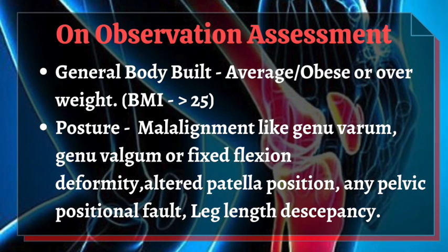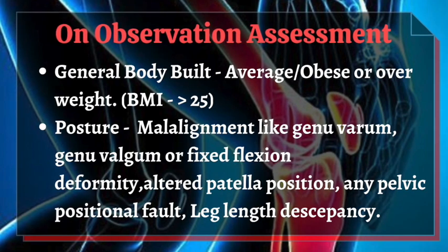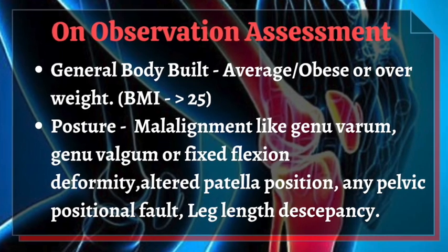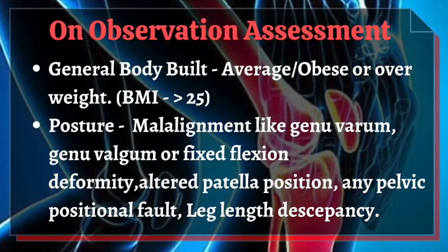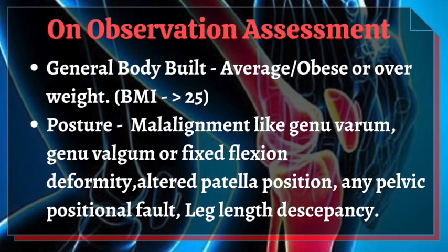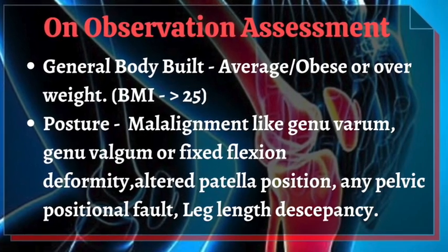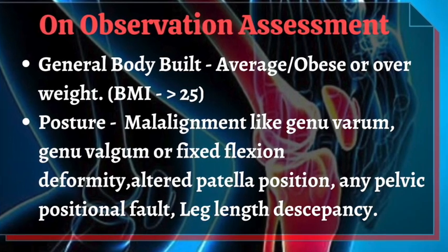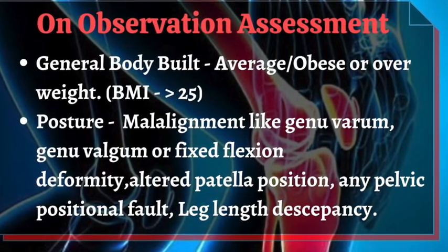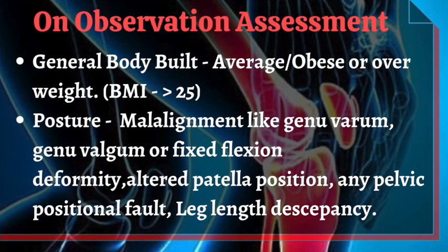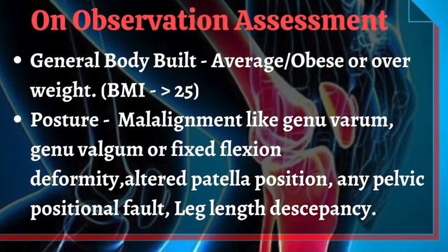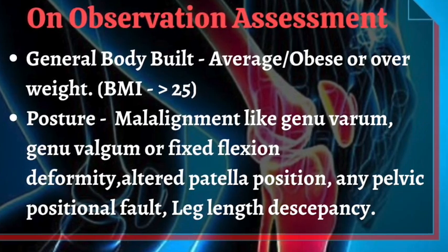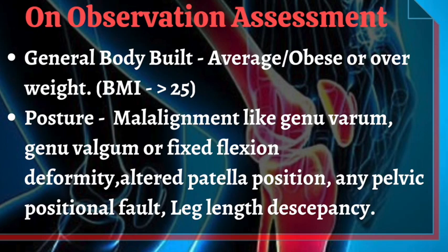Next is the observation part. General body build is either average, obese, or overweight — here the BMI is generally more than 25. Postural deformity includes malalignment of the lower limb such as genu varum, genu valgum, fixed flexion deformity, altered patellar position, pelvic positional fault, and leg length discrepancy.